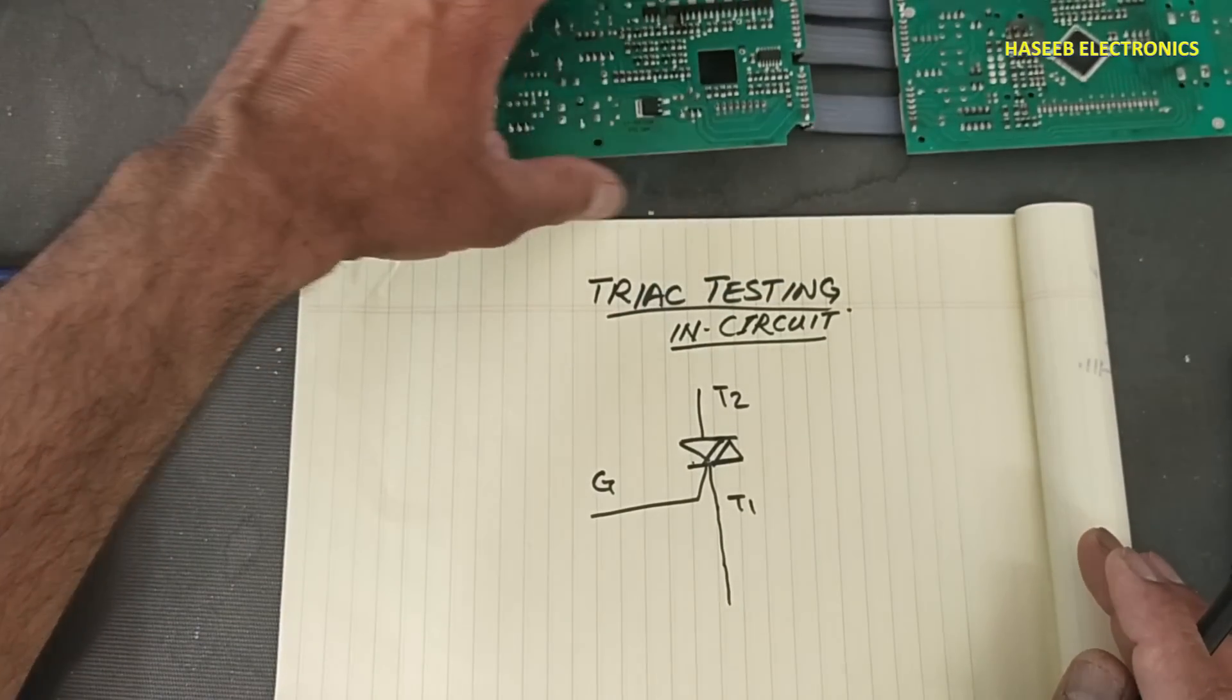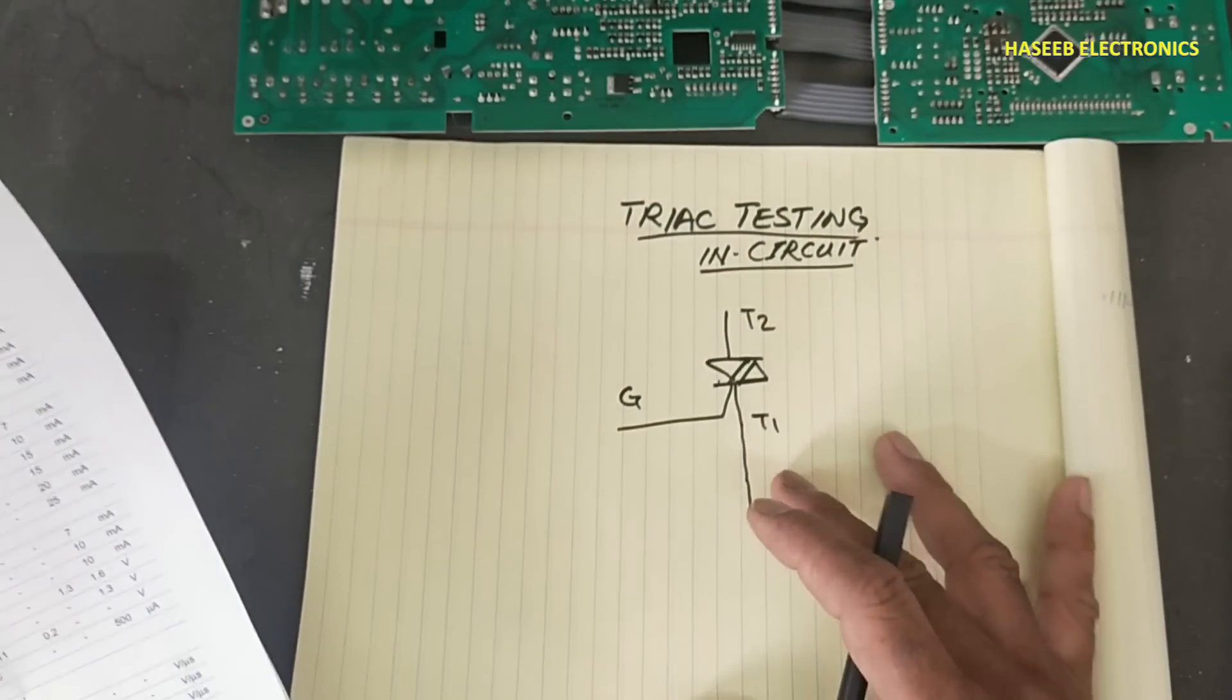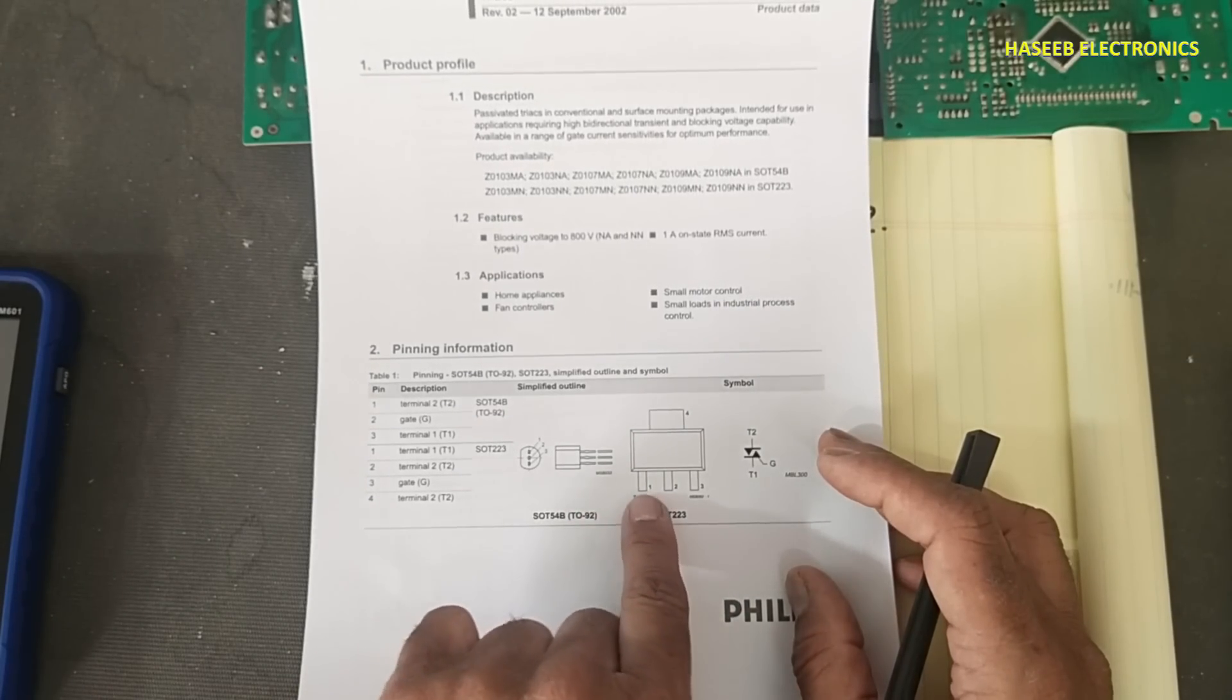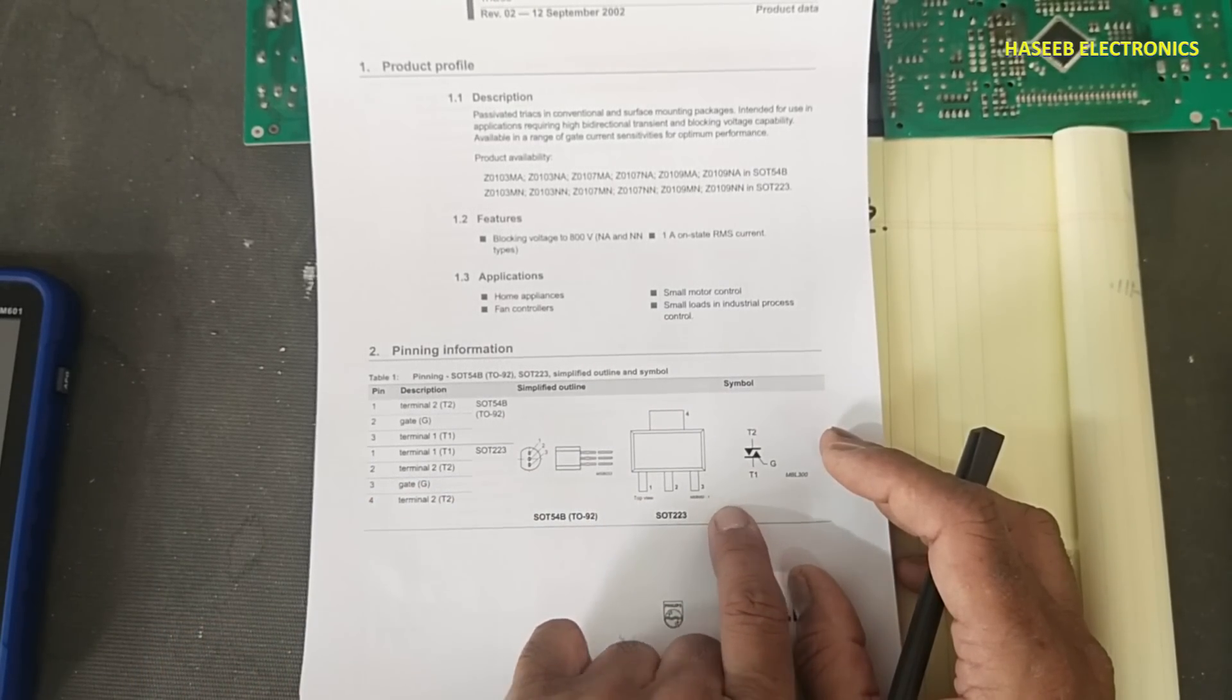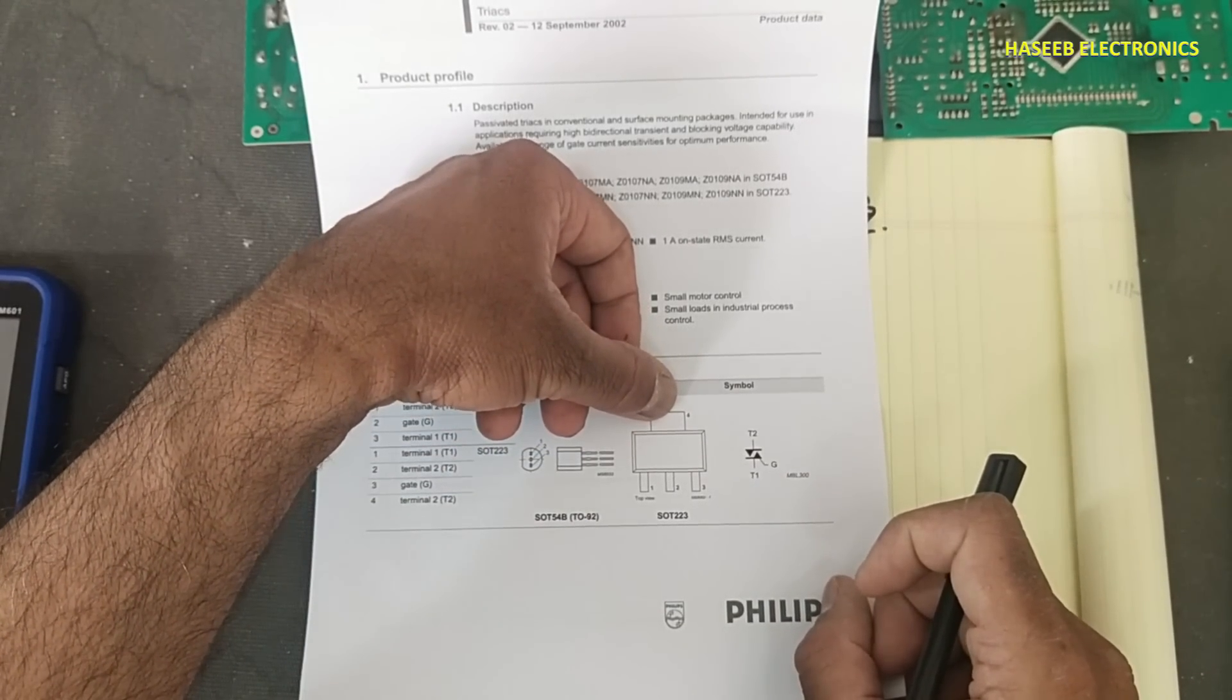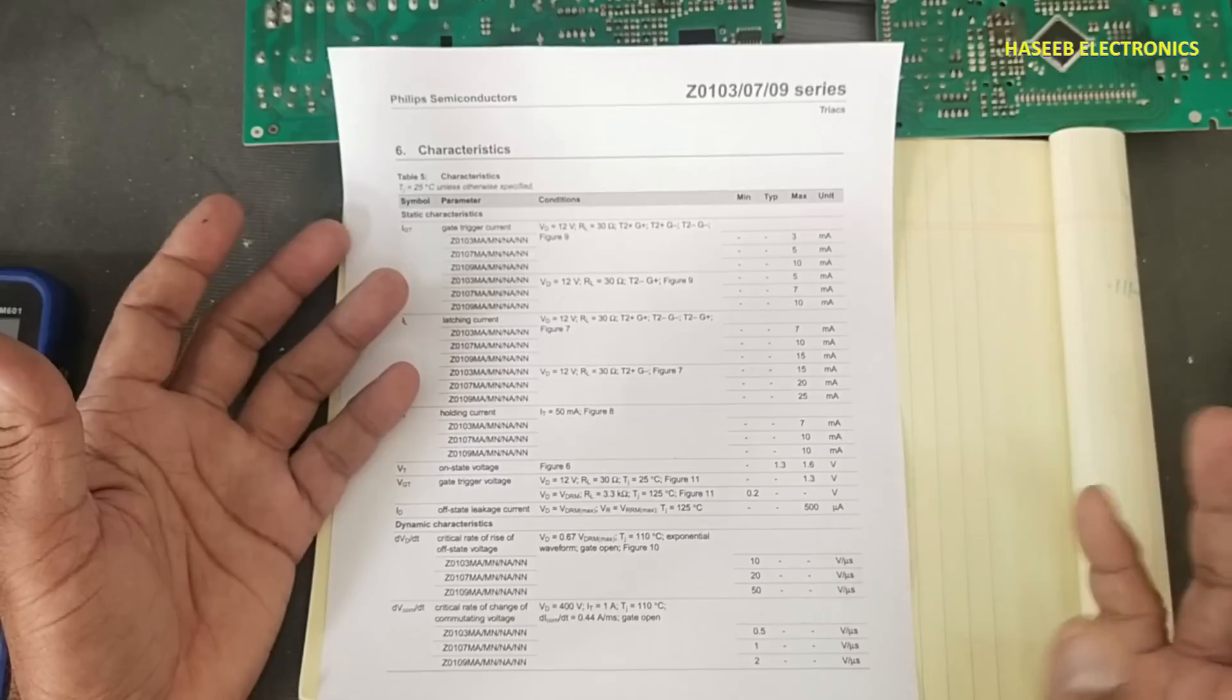This board uses a Z0103M triac. Before performing the test, let's see the datasheet. It's an SOT223 package. Pin 1 is terminal 1, pin 2 is terminal 2, pin 3 is gate, and pin 4 is terminal 2. So terminal 2 is the center pin and the tab. Here is the symbol. It's a 1 ampere, 600 volt triac.